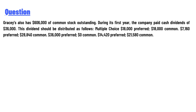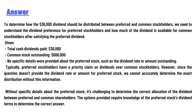To determine how the $36,000 dividends should be distributed between preferred and common stockholders, we need to understand the dividend preference for preferred stockholders and how much of the dividend is available for common stockholders after satisfying the preferred dividend. Given: total cash dividend paid is $36,000, common stock outstanding is 6,000 shares.